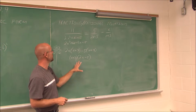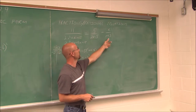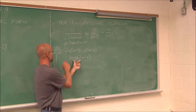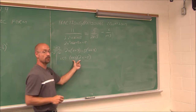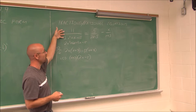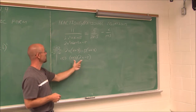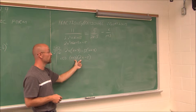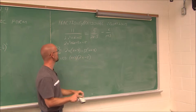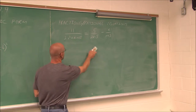Now that I've assessed the LCD, I can see I have these two factors in all of my denominators — (2x − 5) and (x + 3). This is my LCD. I'm going to clear this work so we have a clean slate to work with.